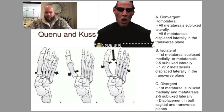It's pretty simple. All you have to remember is it's A, B, and C, and it goes from better to worse. So the first one is homolateral convergent, where all of the metatarsals one through five are dislocated laterally.